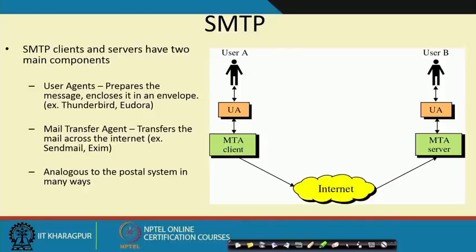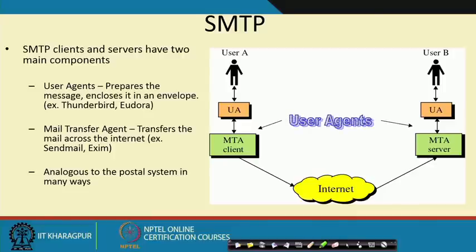SMTP daemon should be running at both ends. We can have two different mail servers that communicate these mails, and users access this mail server to get mails out of it. Individual mailboxes exist on the mail server — like on the IITKGP or CSE server — and users connect either via a web link or by pulling that mail to some other client. These are the user agents and mail transfer agents.